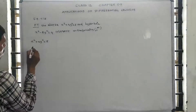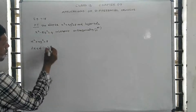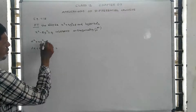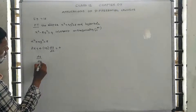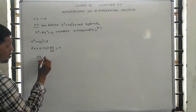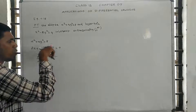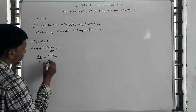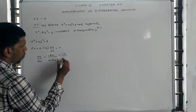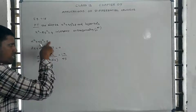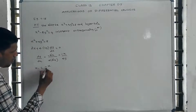Differentiating x squared plus 4y squared equal to 8 with respect to x: x squared differentiates to 2x, and 4y squared differentiates to 4 into 2y into dy by dx, and the constant differentiates to 0. Solving for dy by dx: dy by dx equals minus 2x divided by 4 into 2y, which simplifies to minus x divided by 4y. So m1 equals minus x divided by 4y.